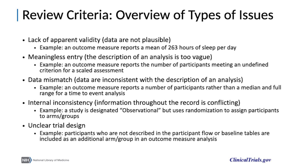The clinicaltrials.gov quality assurance team reviews records for apparent validity, meaningful entries, logic, and internal consistency, and will return a record with comments requiring resolution when major issues arise. These include a lack of apparent validity, such as an outcome measure reporting 263 hours of sleep per day; a description too vague to be meaningful, such as reporting results of a scaled assessment without sufficient information to interpret; data inconsistent with the description of the analysis, such as reporting a count of participants rather than a median and full range for a time-to-event; information inconsistent throughout a record, such as an observational study indicating randomization was used; or an unclear trial design, such as participants appearing in an outcome measure who were not included in the participant flow or baseline characteristics modules.